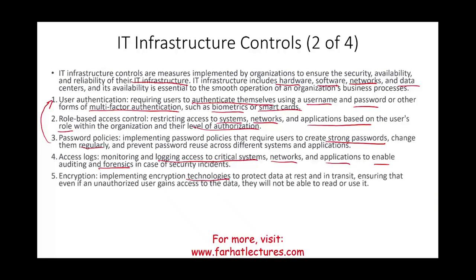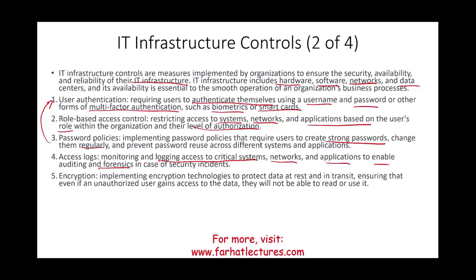Encryption technology is another key control. If someone gains access to the data, encryption makes it unreadable to them. You protect data at rest — whether at your company or at a data center — and data in transit. Even if an unauthorized user gains access, they cannot read the encrypted data without the encryption key, which is itself a separate measure of control.